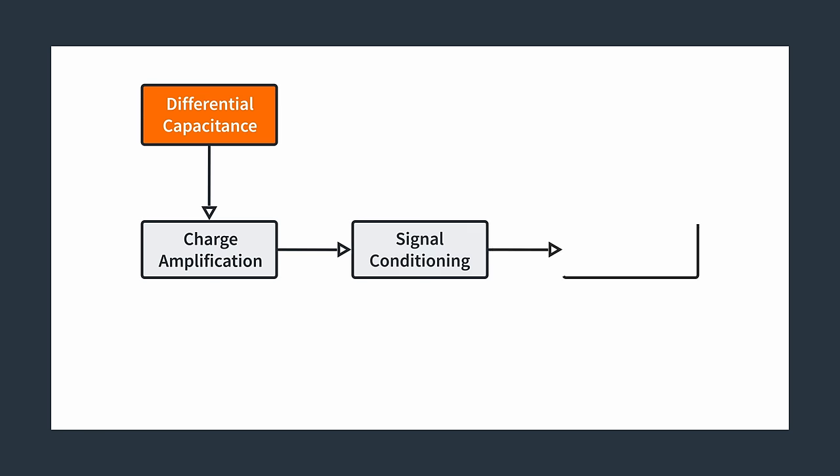The change in differential capacitance is then recorded and passed through charge amplification, signal conditioning, low-pass filtering, before it gets converted to a digital signal using an ADC. In this way, these changes in capacitances are measured and used to quantify the amount of acceleration they're experiencing.